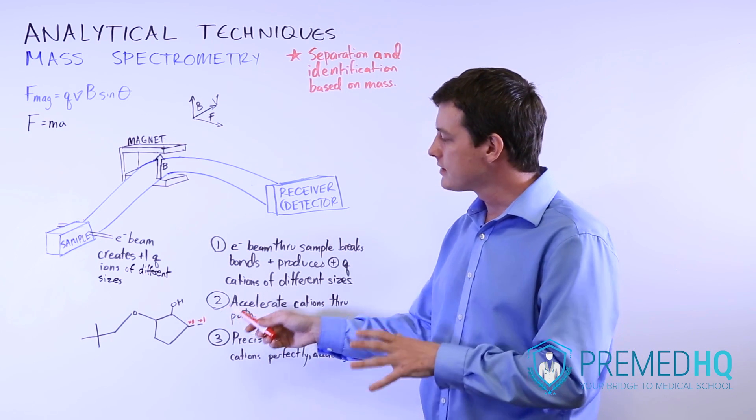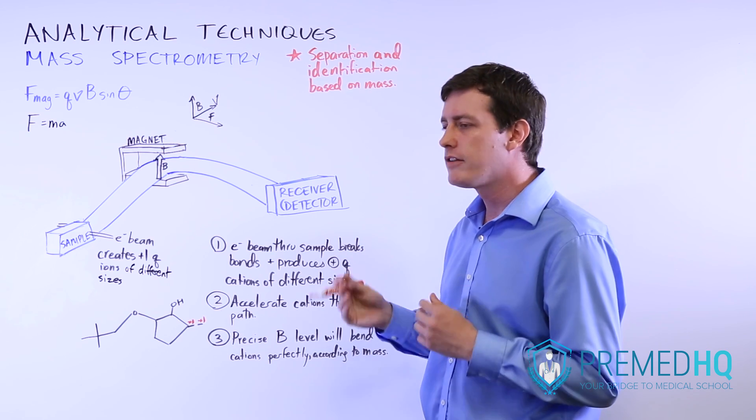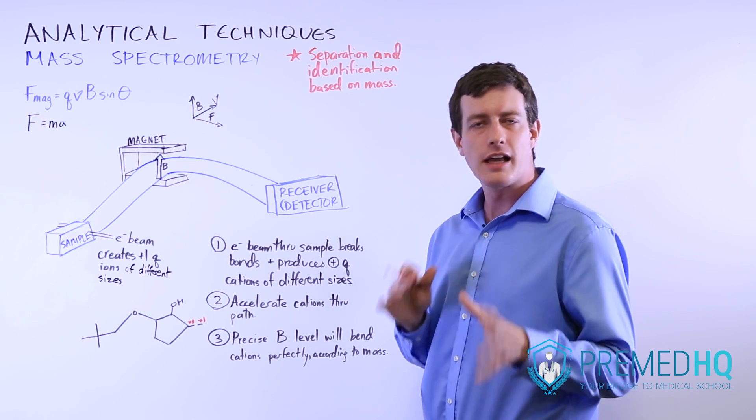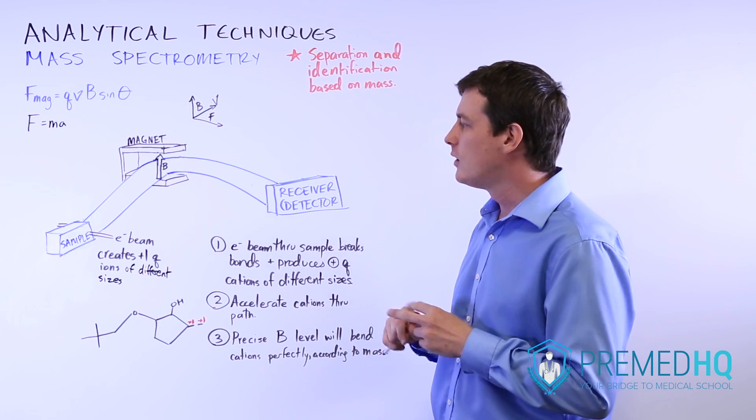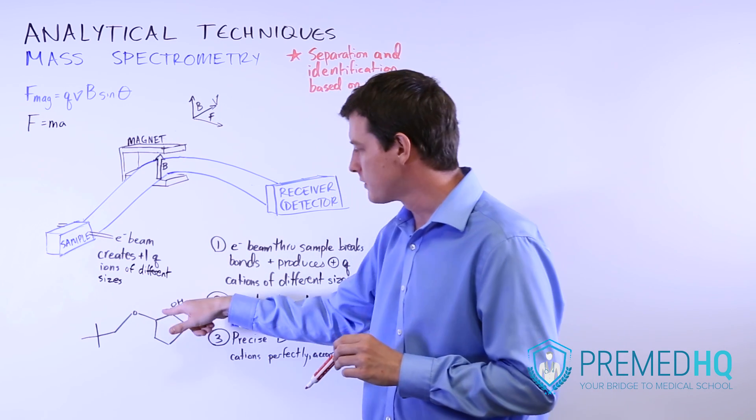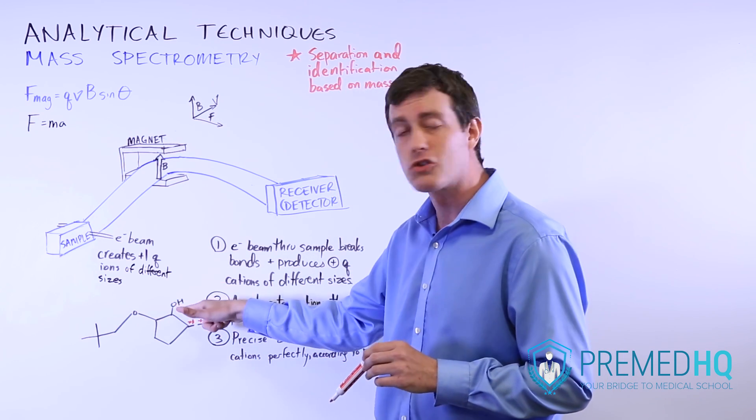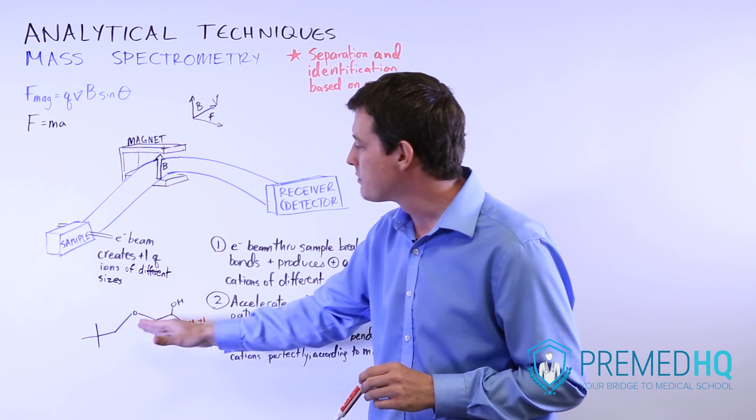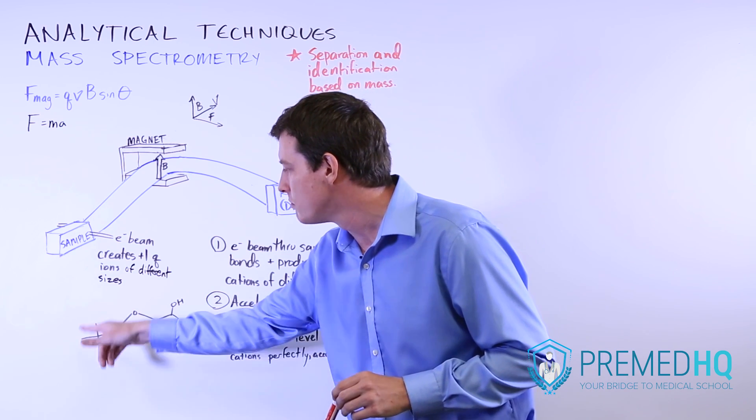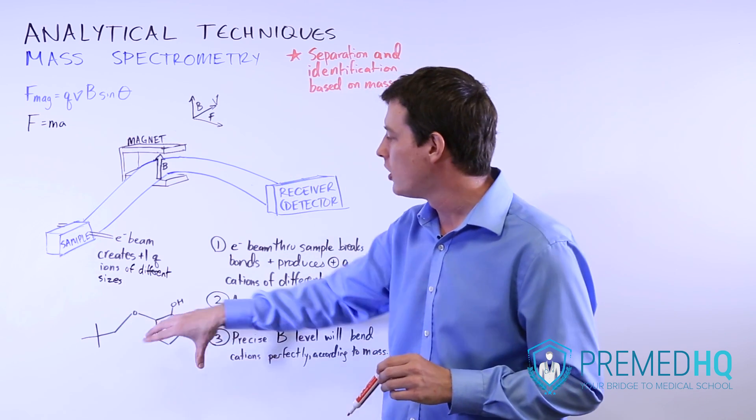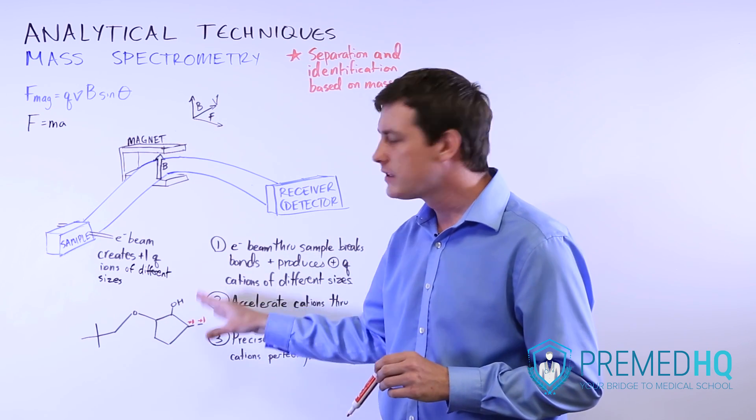They all have the same charge, which means they'll behave in quite the same way in an electrical system. Now that we've formed all these different components, perhaps we have a component that's an OH group with a positive charge, perhaps we have something that's only this tert-butyl group with a positive charge, and we'll have all of the different pieces.